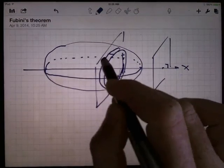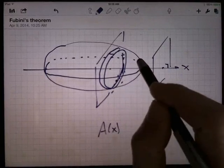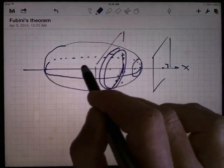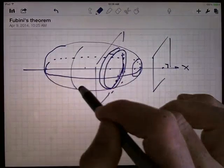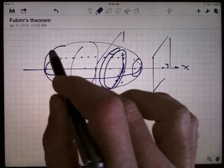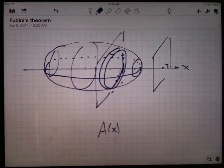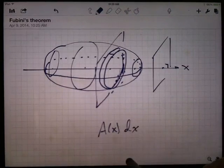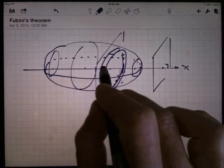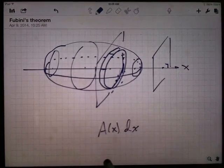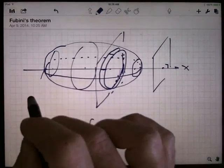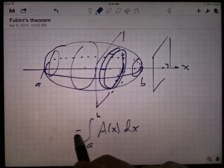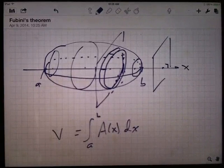then I'd have an area function. That is, each slice would have an area, and it would depend on which slice you had. So for this value of x over here, you might have a small area, for another value of x, you might have a big area, and for over here you might have another smaller area. And you'd multiply that area by a little bit of thickness, a little bit of distance in the x direction here, dx. And then you'd integrate all of those from some starting point to some ending point, from a to b. And that's the way we'd calculate volume. That was volume by slicing.